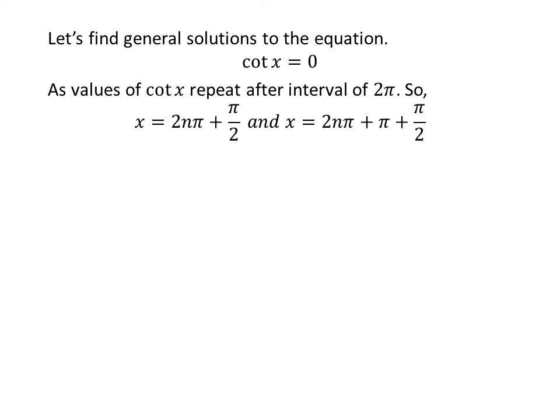Let's find the general solutions for the equation cotangent of x equals 0. As we know, the values of cotangent of x repeat after an interval of 2 times pi. So the general solutions are 2n times pi plus pi over 2, and 2n times pi plus pi plus pi over 2, where n is an integer.